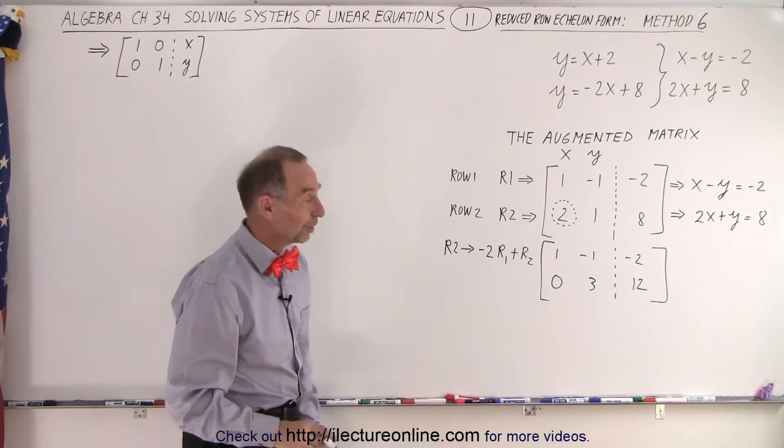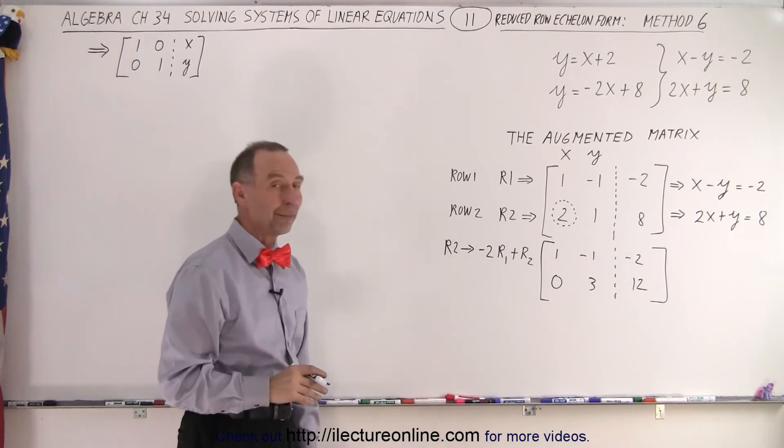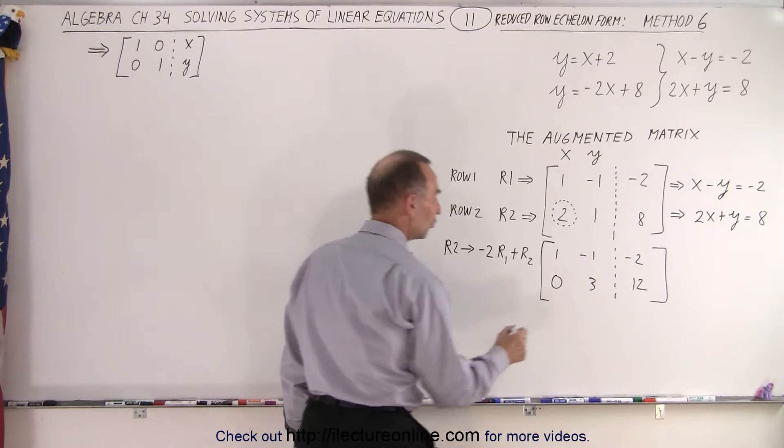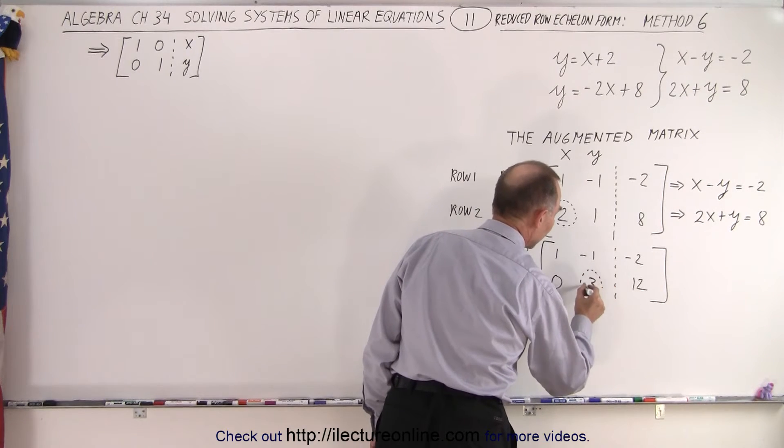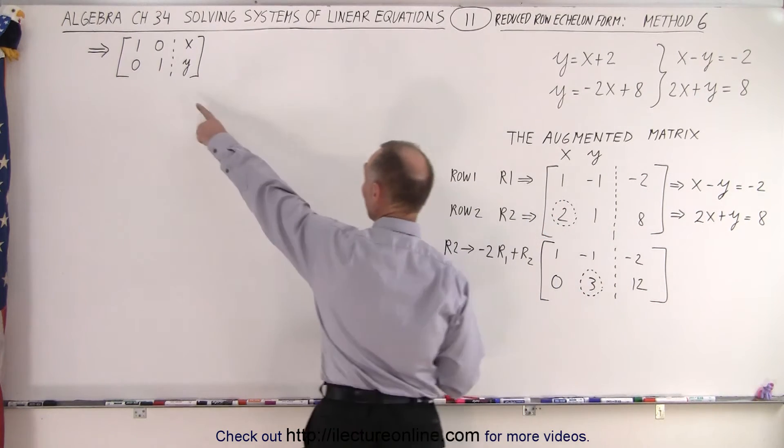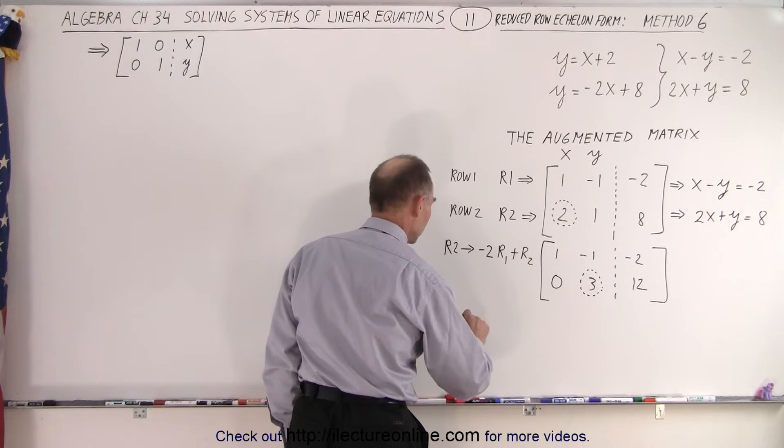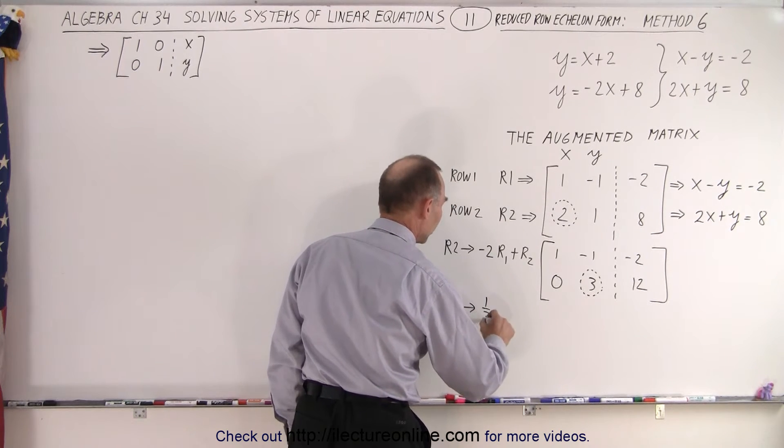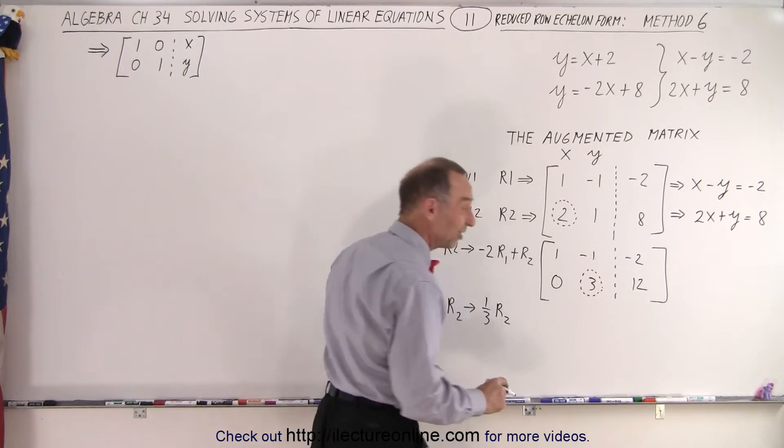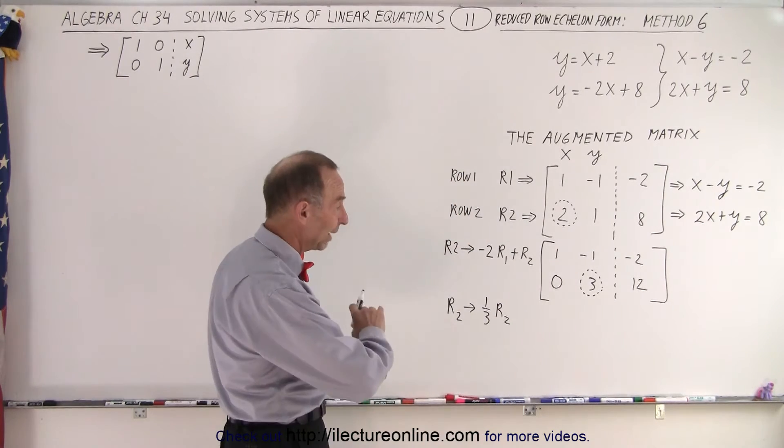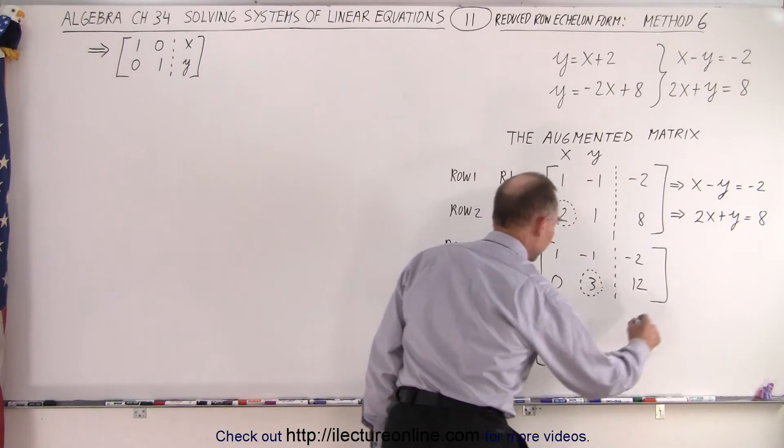Just like before in the previous video, that's our first step. The next step is to turn this into a 1 because that's what we want in the final form. We can do that by taking row 2 and replacing it by one-third times row 2. In other words, we're going to divide that row by 3.